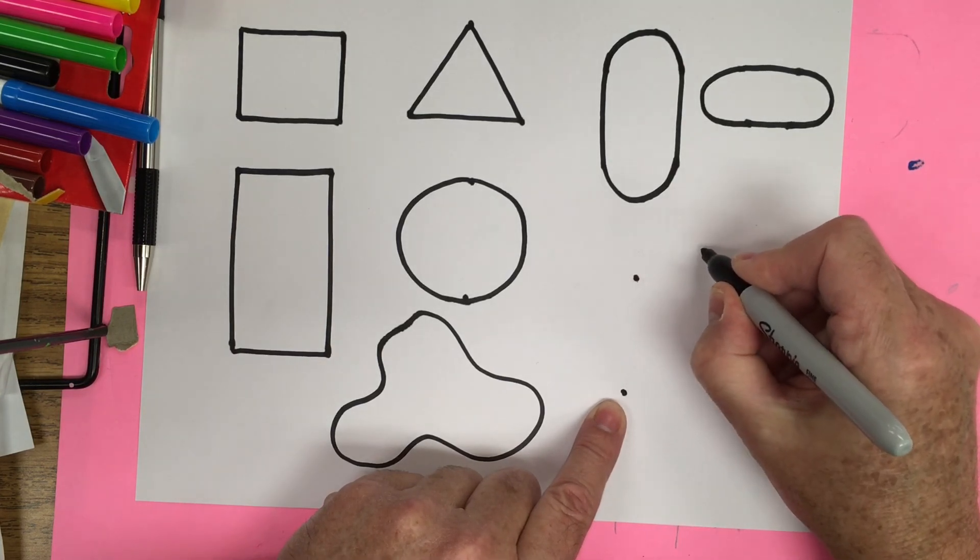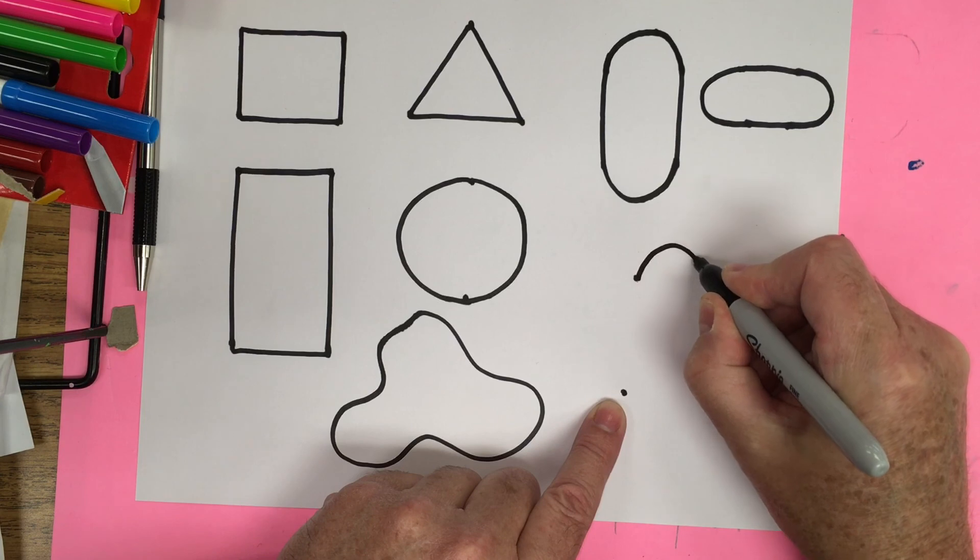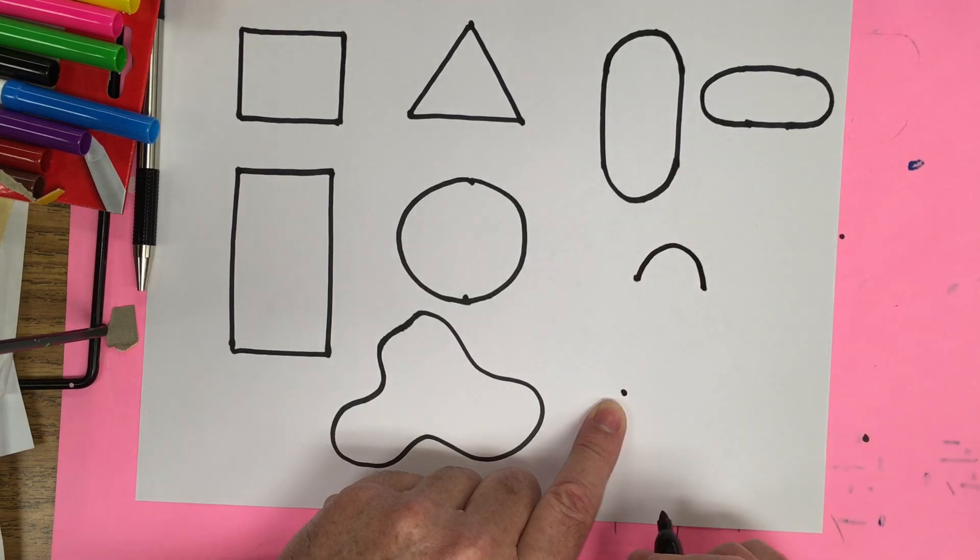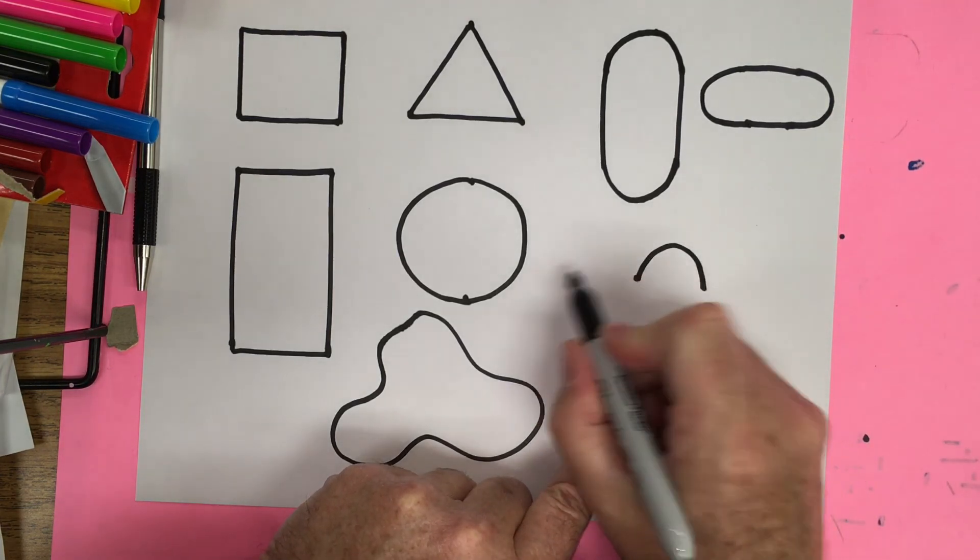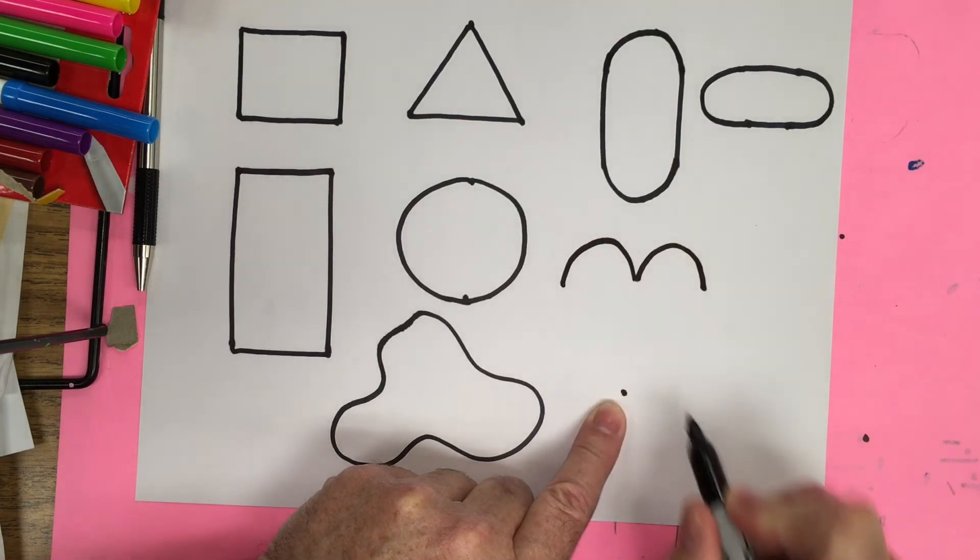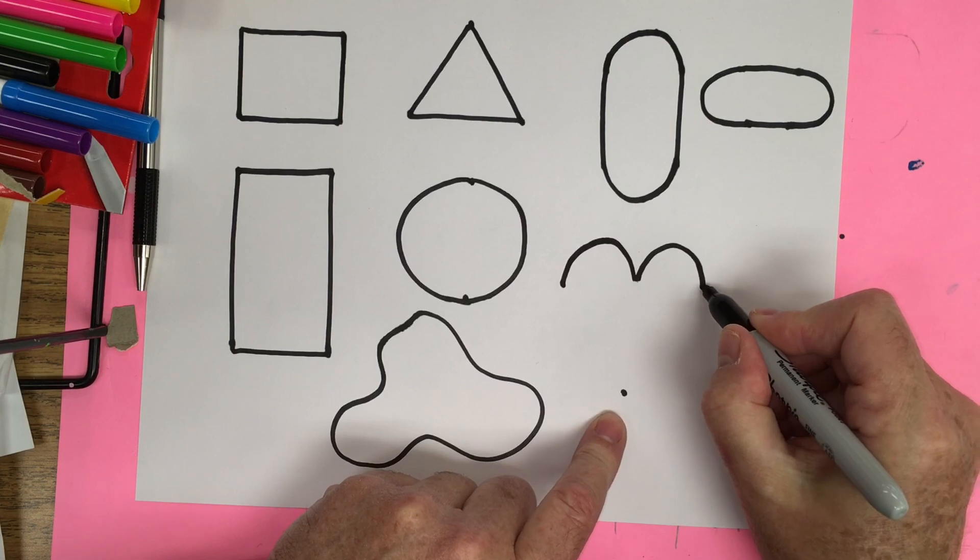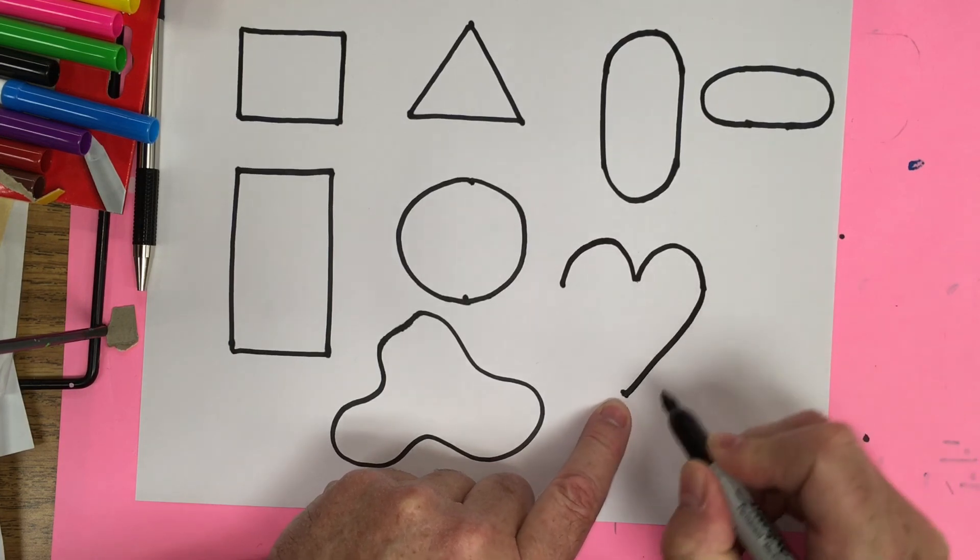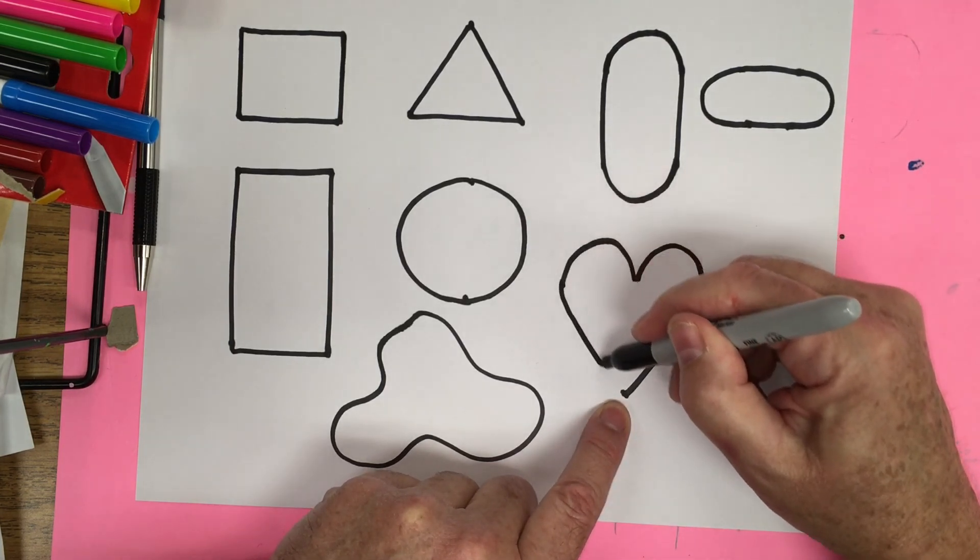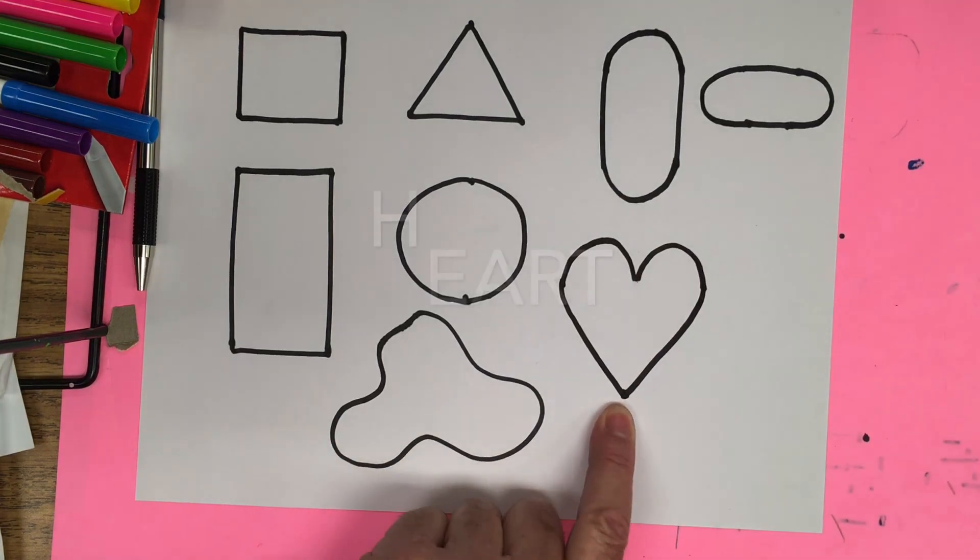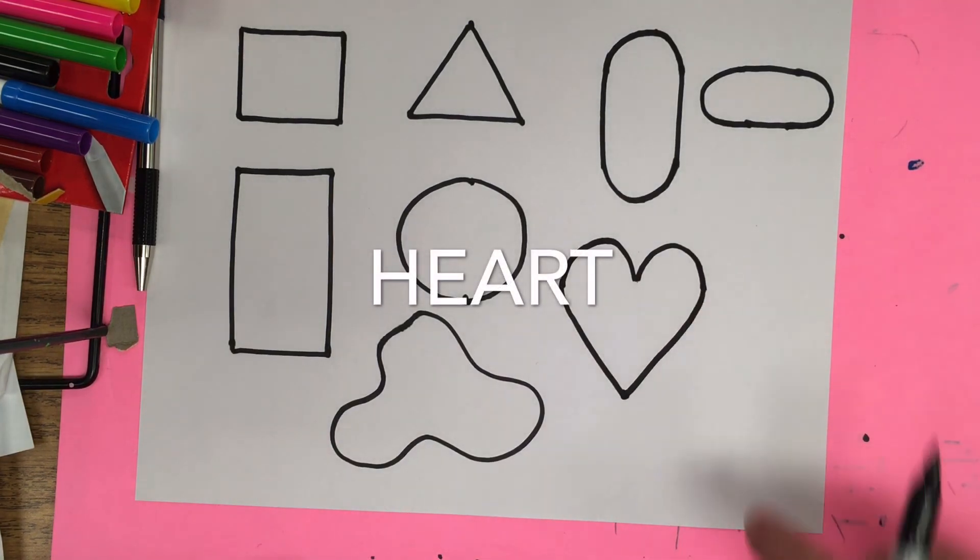Now for one side of the heart, we're going to go up kind of a rainbow curve. So we're going to come up and down. And we're going to do a rainbow curve on the other side. Up and down. That's the top of our heart. Now we just connect this side straight to the dot and this side straight to the dot. And there we have a heart shape.